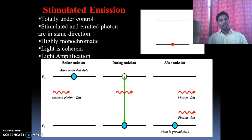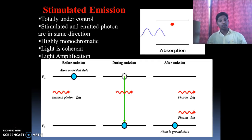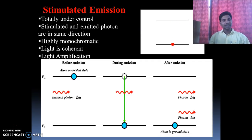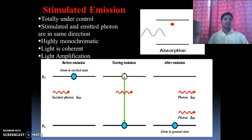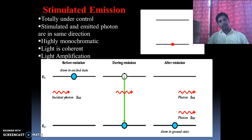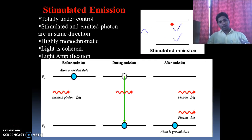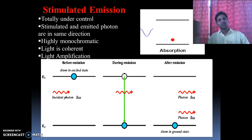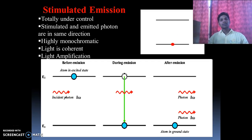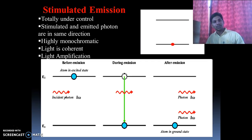Stimulated emission occurs when the atom is already in the excited state and waits there. To produce stimulated emission, the higher energy state must be a metastable state. The major difference between spontaneous and stimulated emission is that photons from spontaneous emission move in all directions and are not monochromatic, while photons from stimulated emission move in only one direction and are all in the same phase. That is why laser is based on stimulated emission.